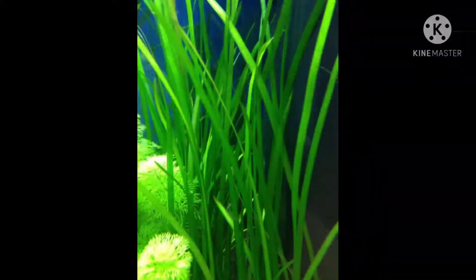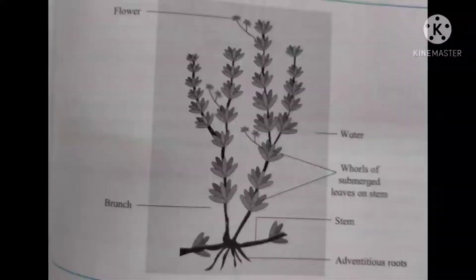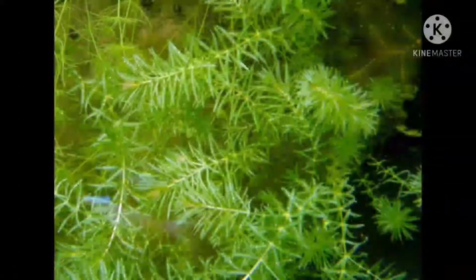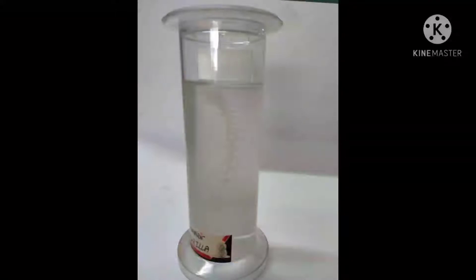Valesneria is another submerged hydrophyte. The diagram given in your practical notebook shows it in detail — where the roots, stem, structure of leaves, branches and flowers are shown.